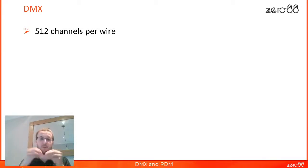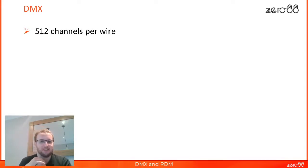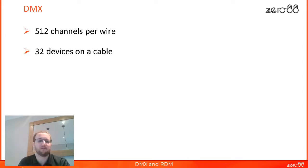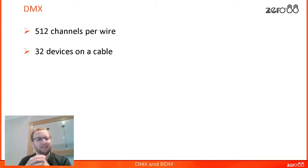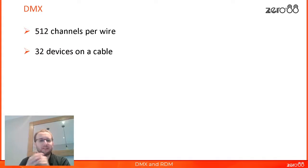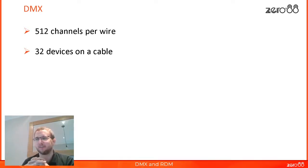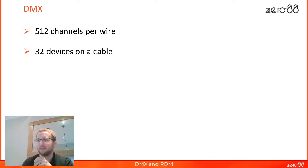You run a second cable for your second universe, or a third, or a fourth. You can easily get into the hundreds of universes on larger setups. On each cable, the official rule is 32 devices. Equipment is much better quality nowadays and you can generally go above 32 without too much of an issue, but officially it's 32. Unlike the 512 channels — which is set in stone — you can't get 513 channels down a cable, but you could happily have 33 or 34 devices.